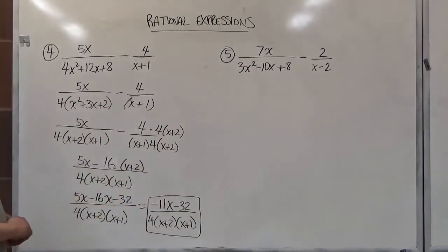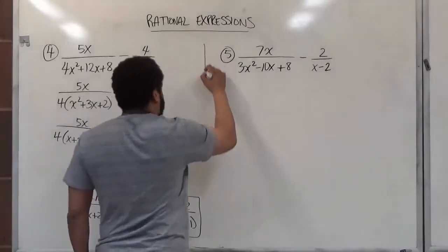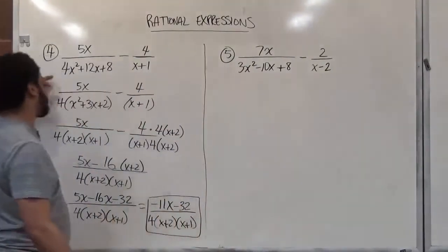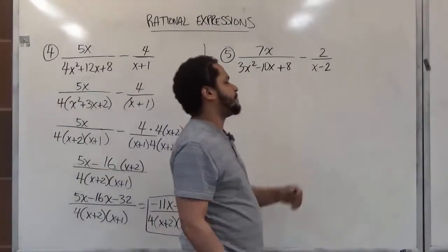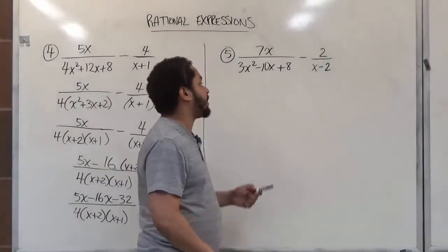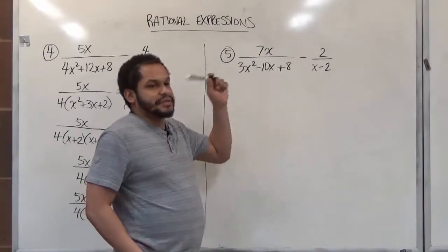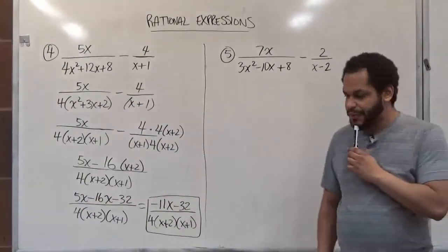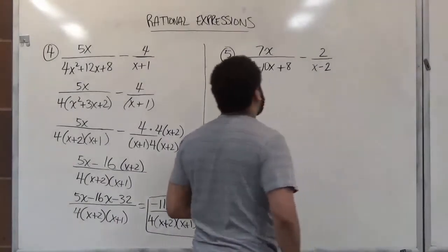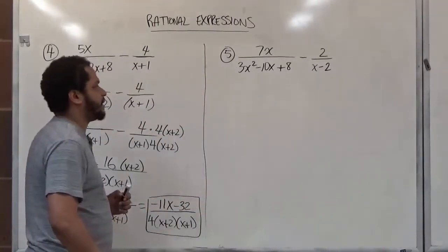Now let's get on to the last problem, number 5. Number 5 is a bit more challenging than even this one, because this had a greatest common factor, but here there is no greatest common factor. What this involves is figuring out the terms that add up to the middle term. The difficult part is that 3 is a prime number, so this should not be so difficult through trial and error.